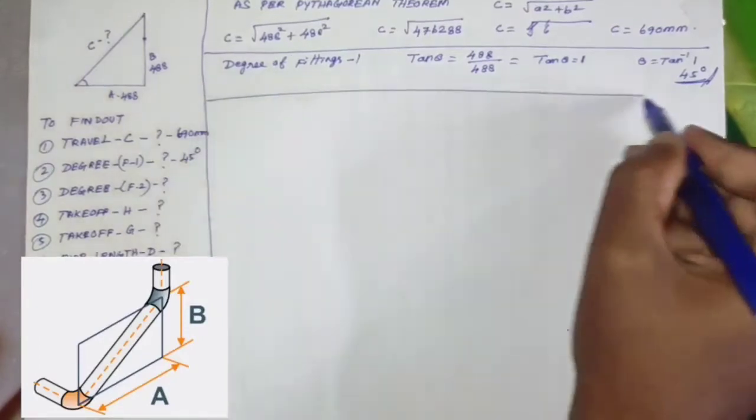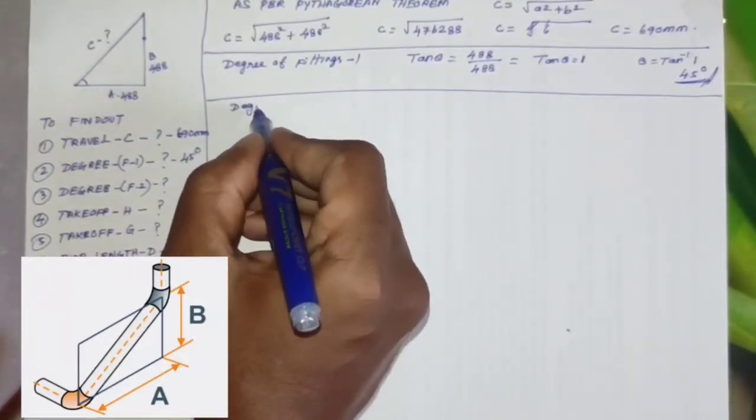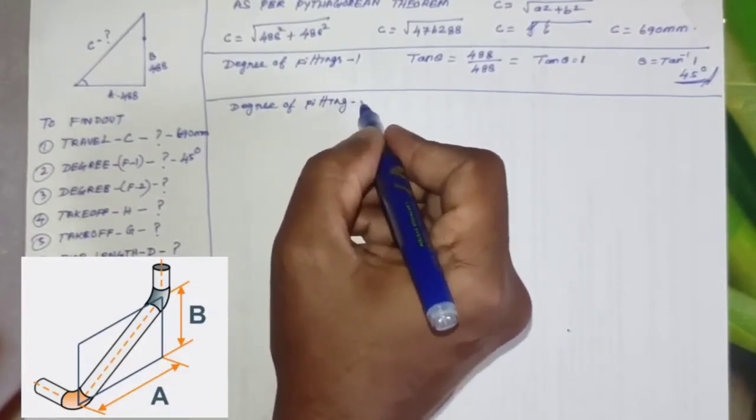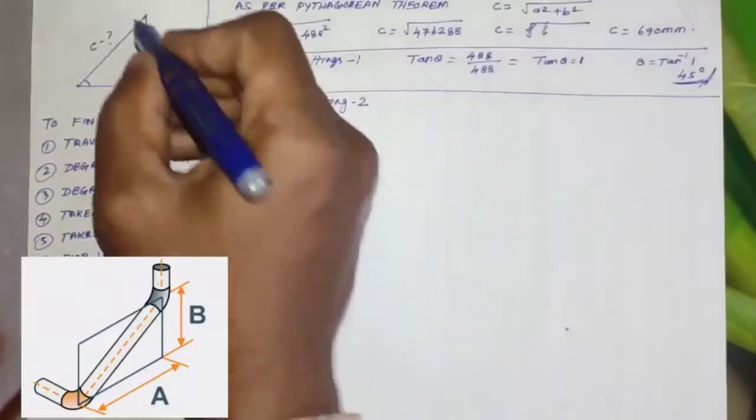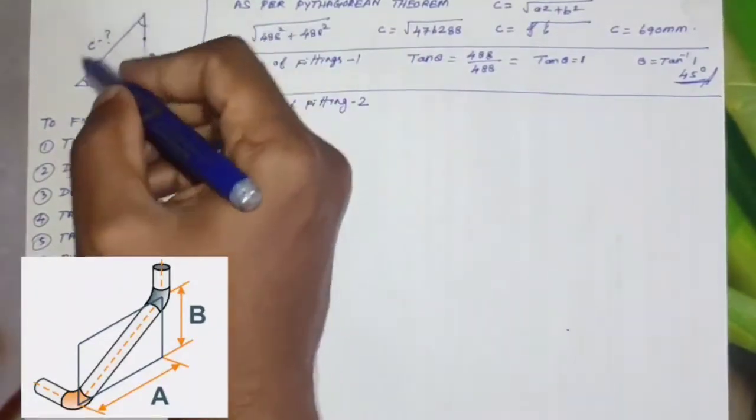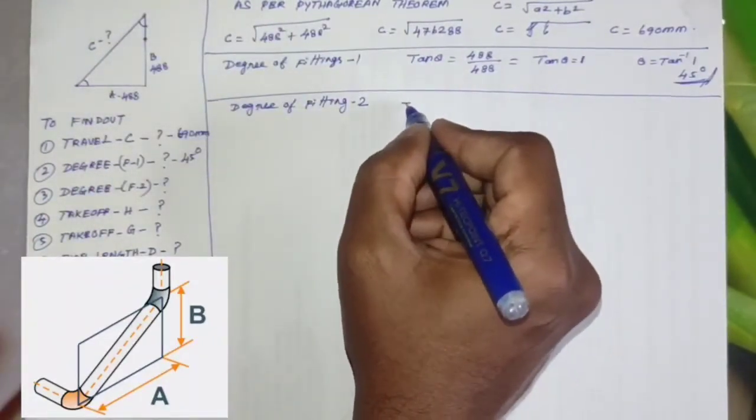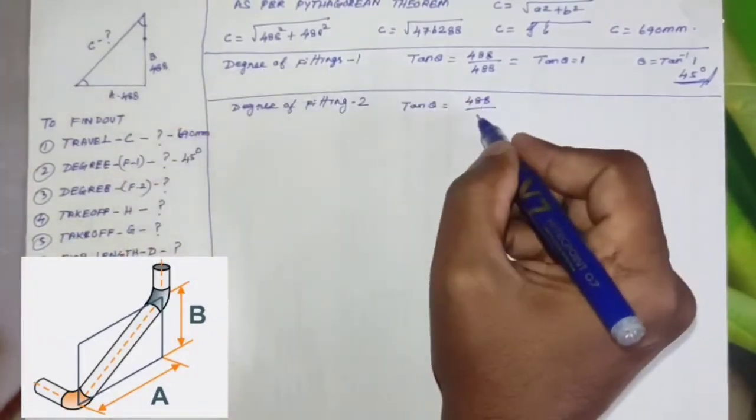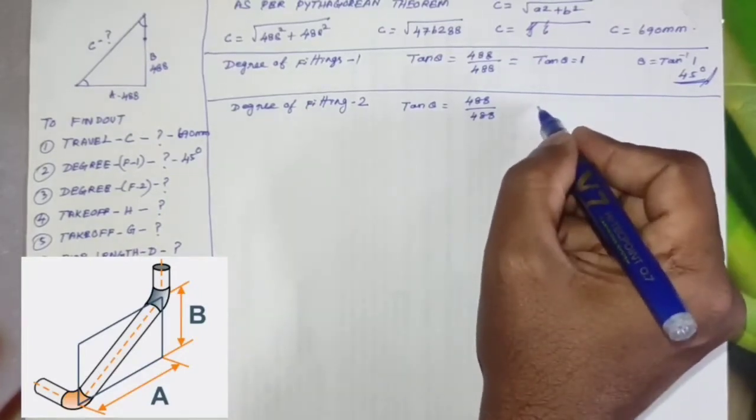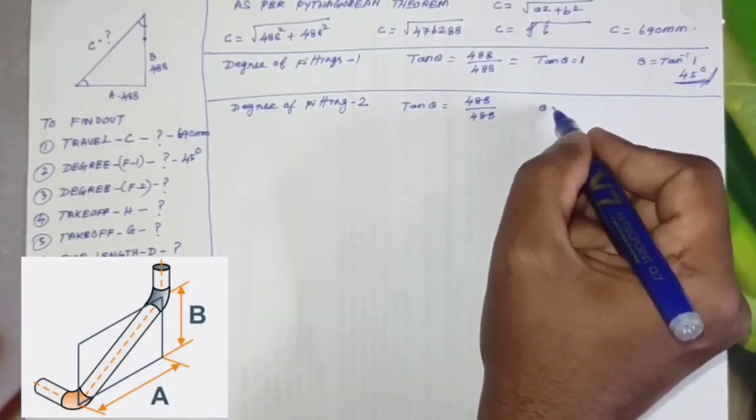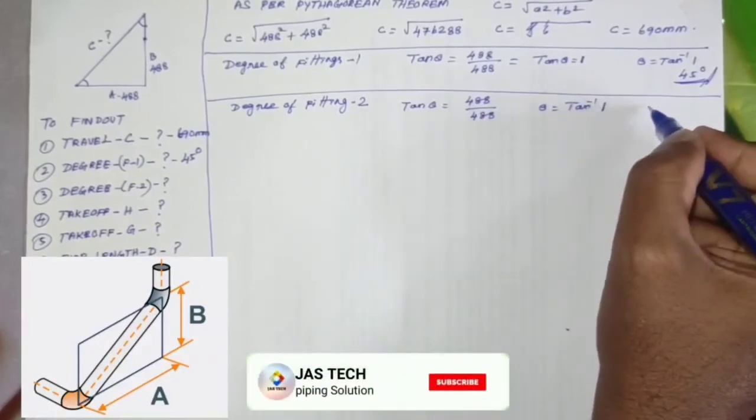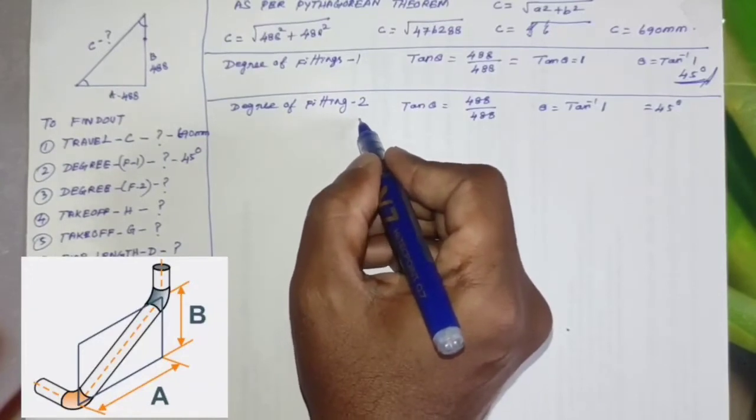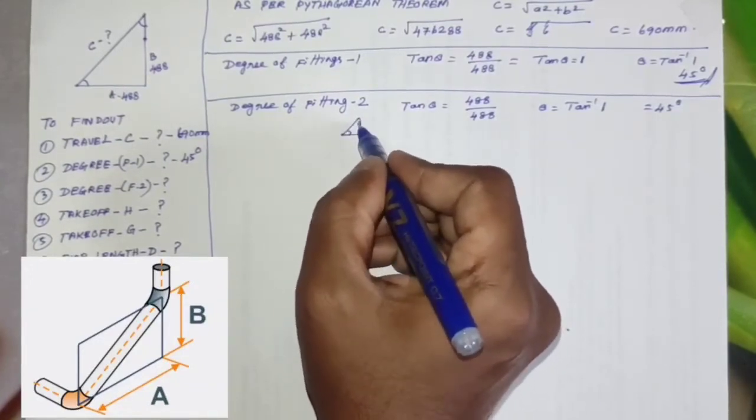Another side degree, we want to find degree of fittings two. Same formula we can use: tan theta equals opposite 488, adjacent side 488. So tan theta equals 1, theta equals tan inverse 1. By using calculator, tan theta 1 equals 45 degree.